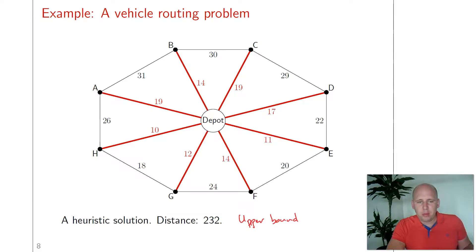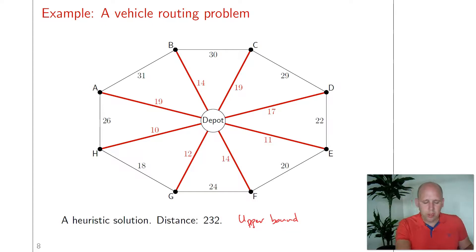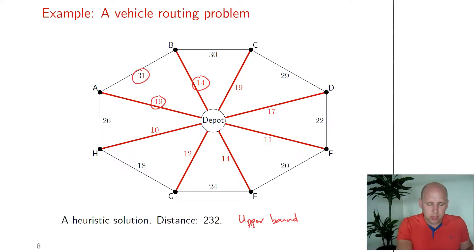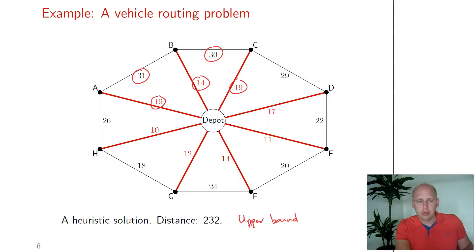We can think about ways to improve this heuristic and reduce the total distance. For instance, if we go to A and back and then to B, the total distance is 19 plus 14. However, if we make a direct connection from A to B, it's only 31 instead of 33. So the total travel distance is reduced by using the direct connection. This applies to all direct connections — for example, going directly from B to C gives 30 instead of 33. For each outer edge used, the total travel distance is reduced, and that can be used for a second heuristic.